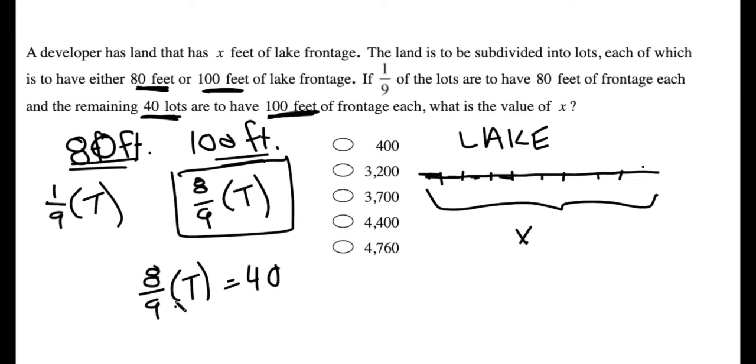And then I can solve for T. Multiply by 9, divide by 8, solve for T, and I find that T, the total number of lots, is 45.